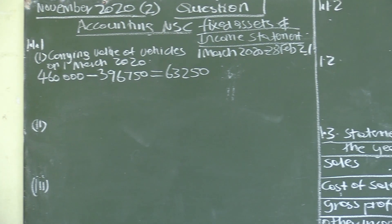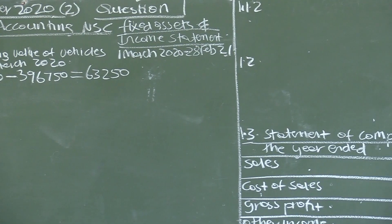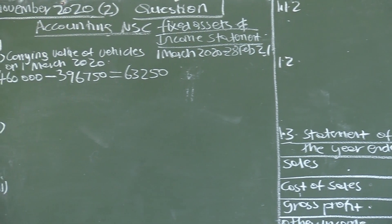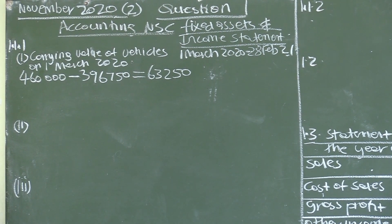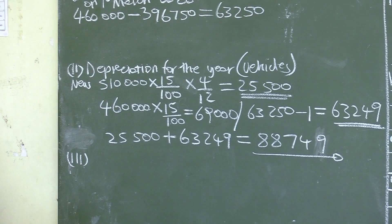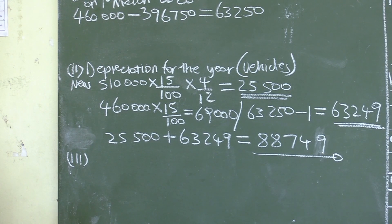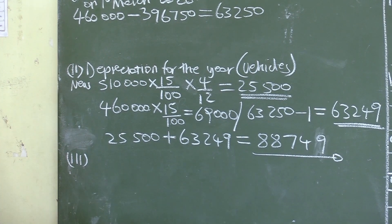Our vehicles were valued at 63,250 at the beginning of the accounting period. Our depreciation for the year for the vehicles is 25,500 for the new vehicle plus depreciation of the old vehicle, 63,249. This gives us a total of 88,749.